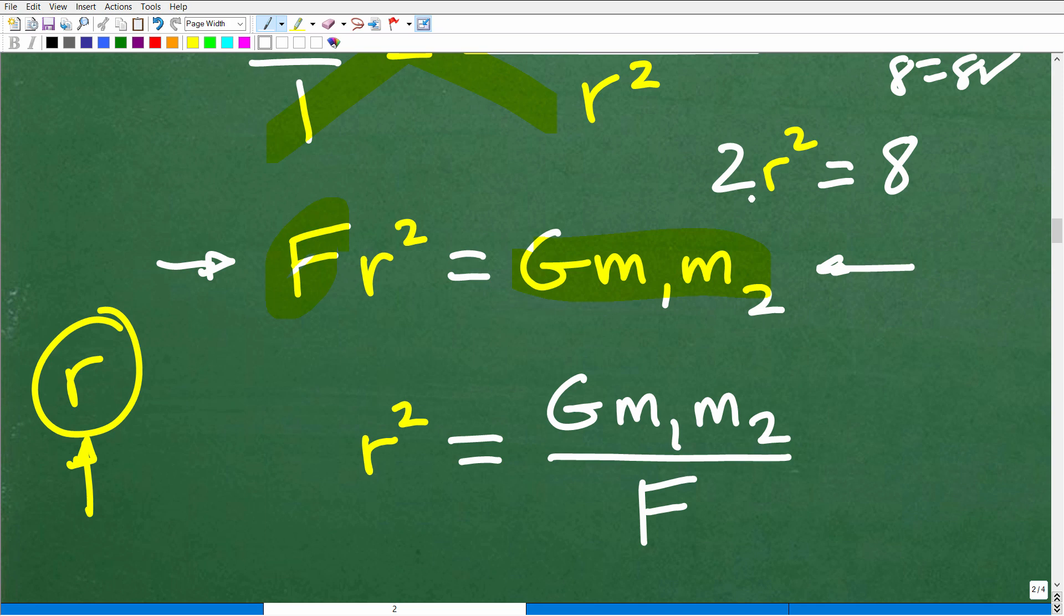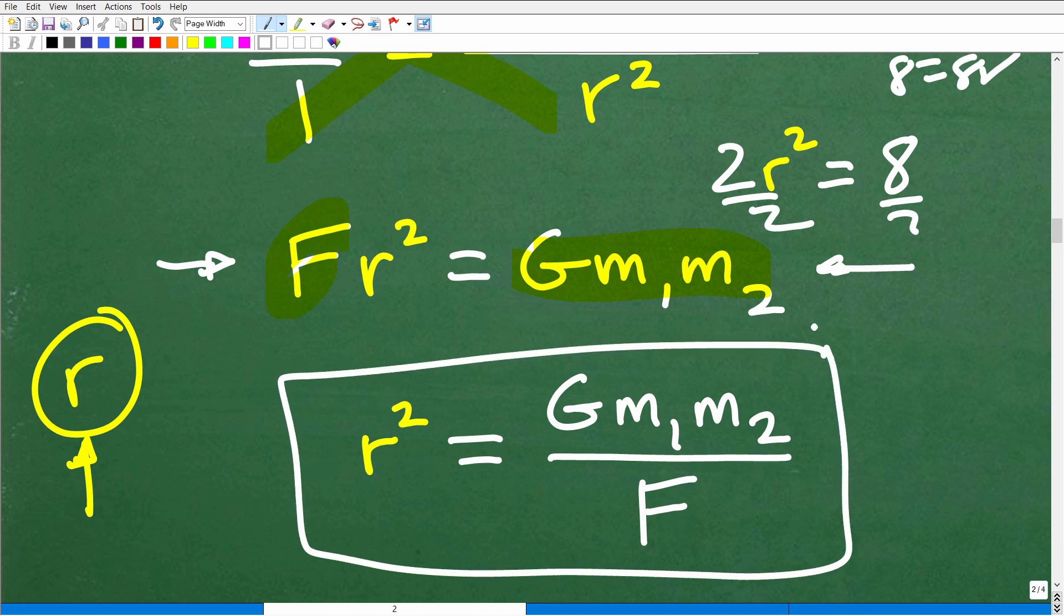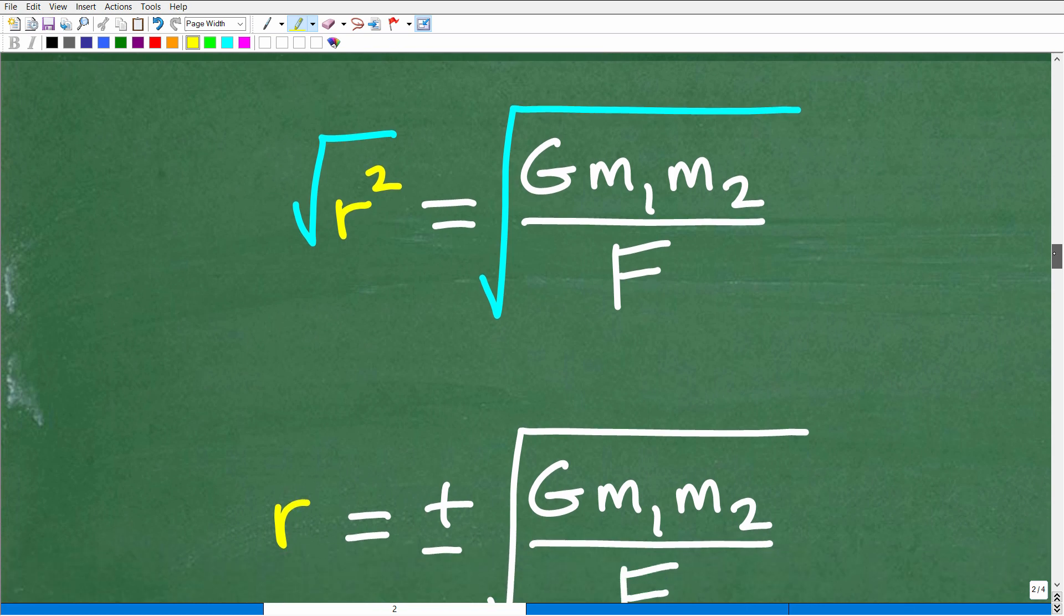Effectively, you have a situation something like this, like 2R squared is equal to like 8. So I mean, it's really easy. To solve for R squared, we just simply divide both sides of the equation by 2. In this case, just divide both sides of the equation by F. And so we have this. Now we have R squared is equal to just one big number.